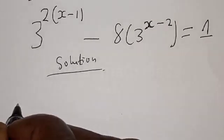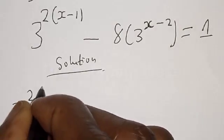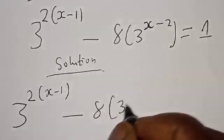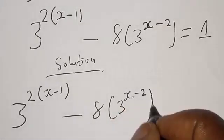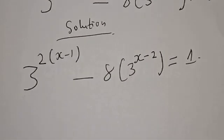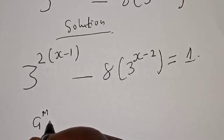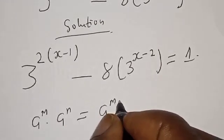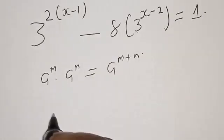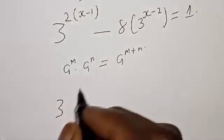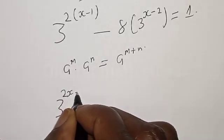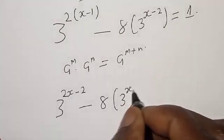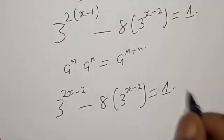We have the given equation: 3 raised to power 2(x minus 1) minus 8 multiplied by 3 raised to power (x minus 2) equal to 1. Remember, if you have 3 raised to power m multiplied by 3 raised to power n, this is the same as 3 raised to power (m plus n). Our equation becomes 3 raised to power 2x minus 2, minus 8 into 3 raised to power (x minus 2), equal to 1.